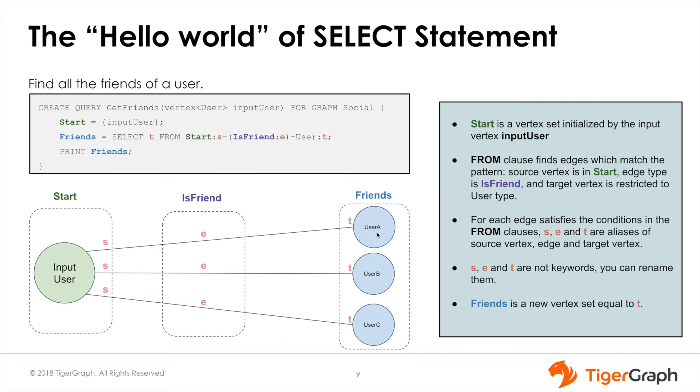They are then stored in the Friends vertex set. Aliases always come after a colon symbol and they can be renamed to whatever you want because they are not reserved keywords. Once we have stored all the results we can print them out.